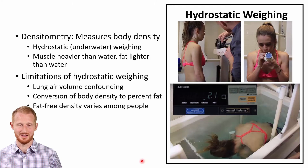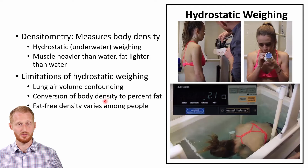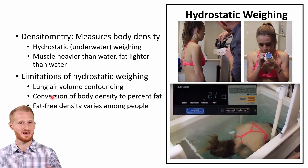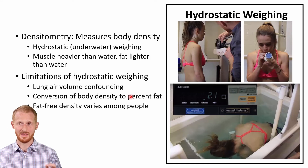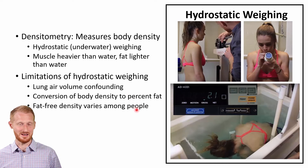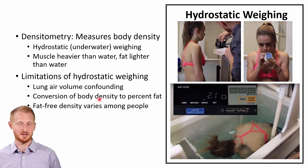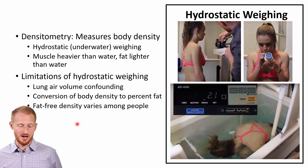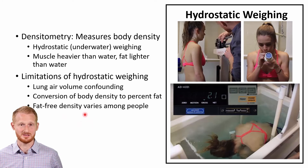Hydrostatic weighing is a body density test, not a body fat percentage test directly, so you have to do a conversion — which is a straightforward couple-step equation. However, everybody's body density is a little different, so if you assume a certain body density for a person and you're wrong, it can lead to errors in the body fat percentage calculation. This is going to be an issue with any of the body density-based body fat assessment measurements, not just this one. Fat-free density does vary among different people.